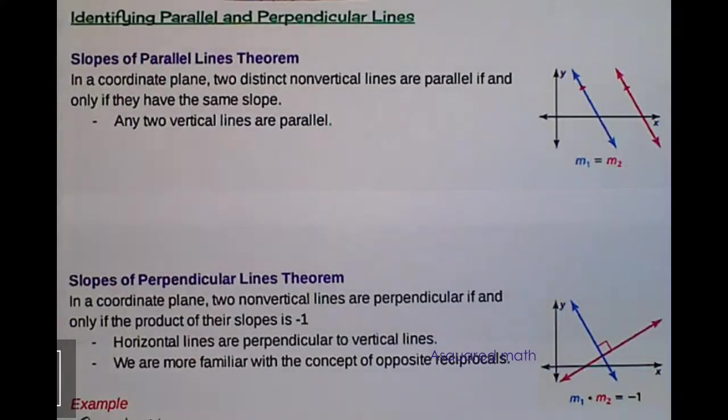The next portion of this section is probably review from algebra 1, and it's identifying parallel and perpendicular lines. So if we're looking at parallel lines, we know parallel lines never intersect. Therefore, their slopes have to be exactly the same. So slope 1 has to equal slope 2.